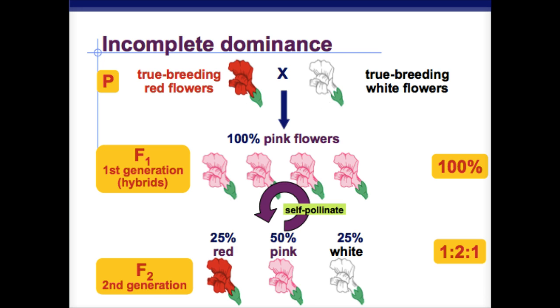The true breeding parents, when you blend the two at the first generation, you'll end up with pink flowers. After the F2 generation, you'll end up with 25% red, 50% pink, and 25% white.